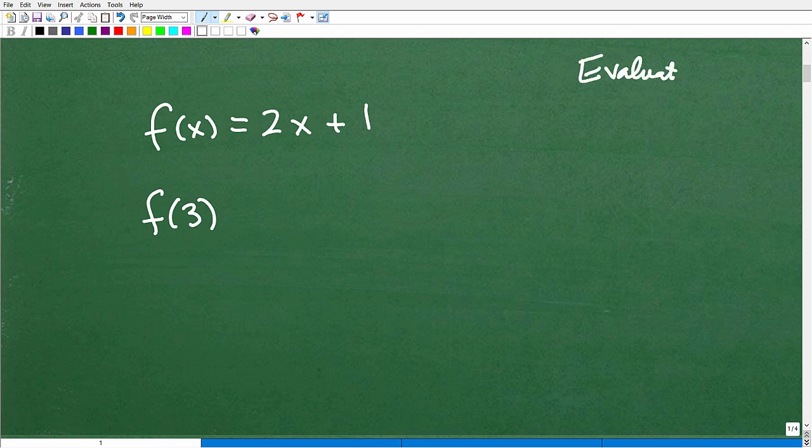All right. Evaluate. So that word is a pretty common math word. So evaluate this function for 3. We want to find f of 3. So this means here, you can see I'm replacing this x with a 3. So if I'm replacing this x with a 3, I'm going to replace this x with a 3. So this will be 2 times 3 plus 1. And 2 times 3 is 6 plus 1. And that's 7. So f of 3 is equal to 7.